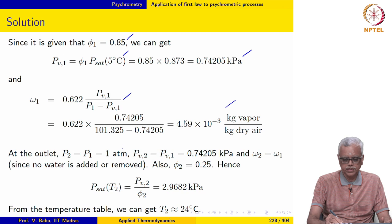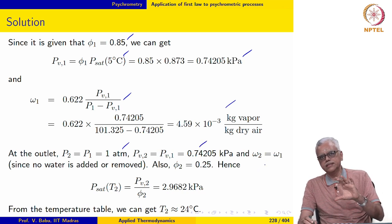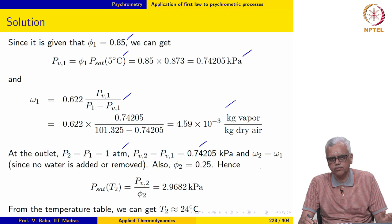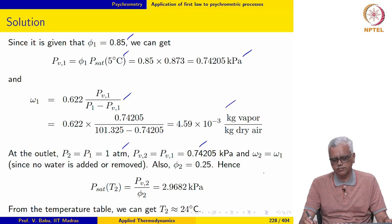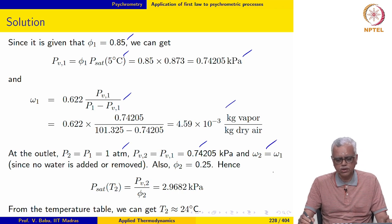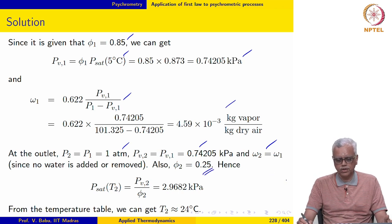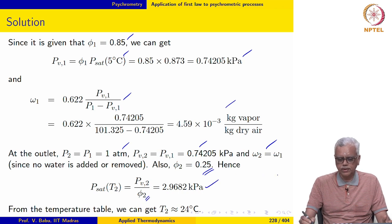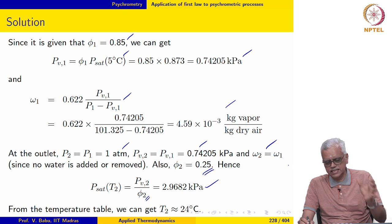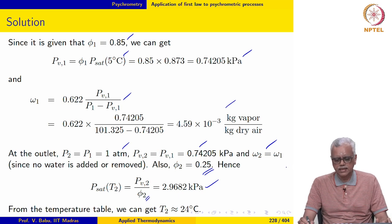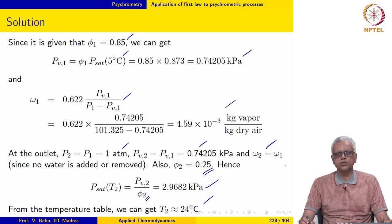At the outlet, the mixture pressure remains the same and since no water is added or removed, the partial pressure of water vapour also remains the same — PV2 equals PV1 and omega2 equals omega1. Using the definition of relative humidity and the given outlet value of 25%, we evaluate Psat(T2) to be 2.9682 kPa, and from the temperature table the exit temperature is 24°C.